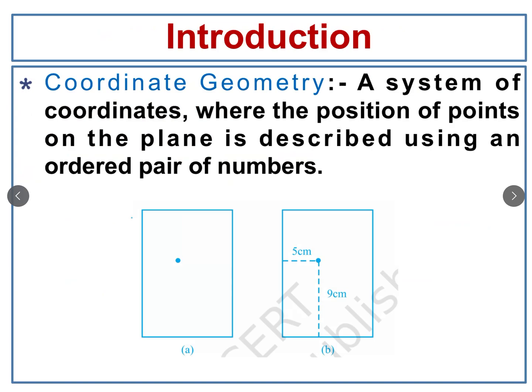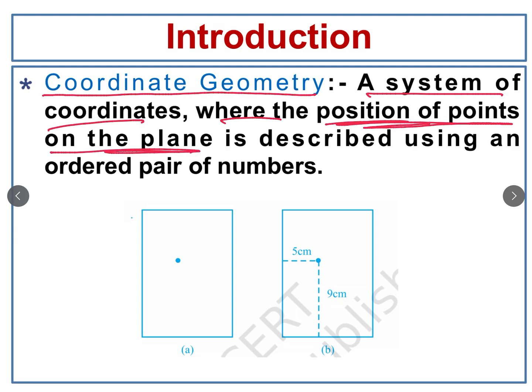Let's look at the general definition of coordinate geometry. It is a system of coordinates where the position of points on the plane is described using an ordered pair of numbers. This means in coordinate geometry we will locate the exact position or location of any object or a point in the plane using an ordered pair of numbers — that is a system of coordinates.